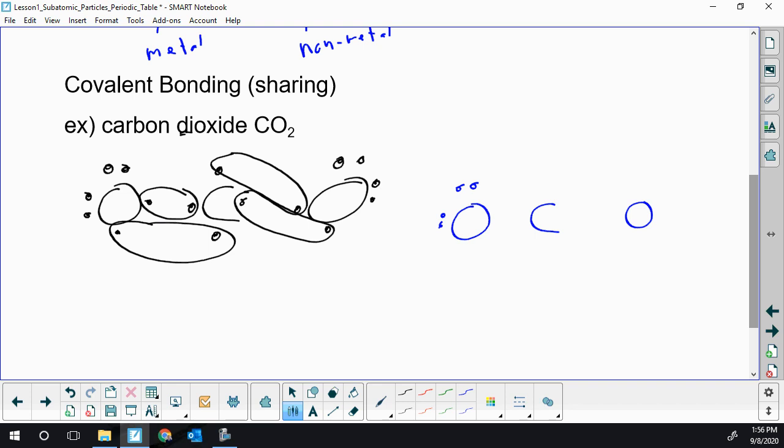But here we've got one, two, three, four sharing and I'm going to draw those between the atoms. Those electrons are going to get shared on both sides. Here we've got two, four sharing on this side.